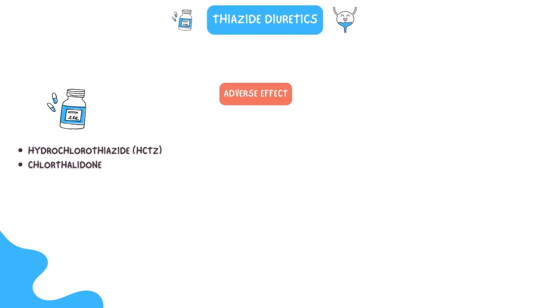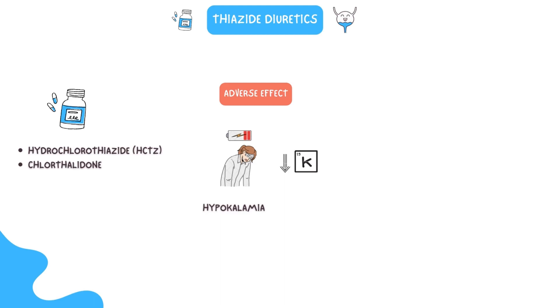Adverse effects of these drugs include hypokalemia. The most well-known side effect of thiazide diuretics is hypokalemia. During the first two to three weeks of HCTZ therapy, hypokalemia must be closely watched because it can be fatal.